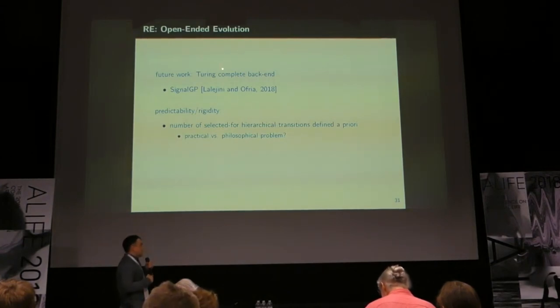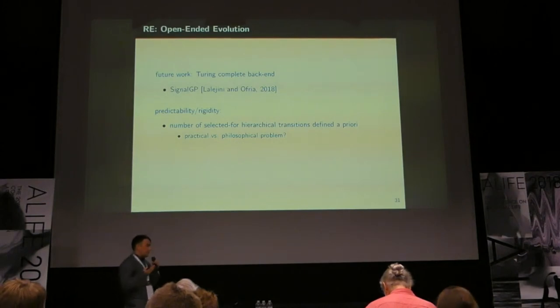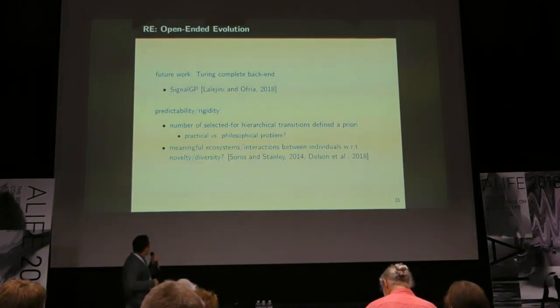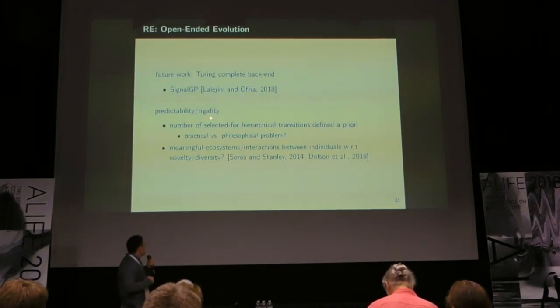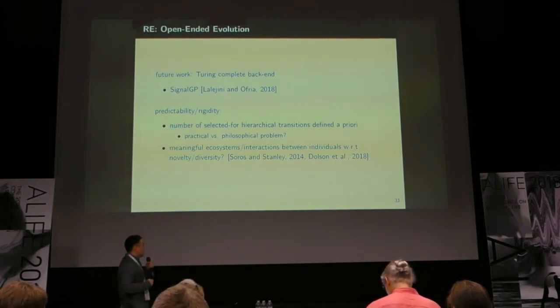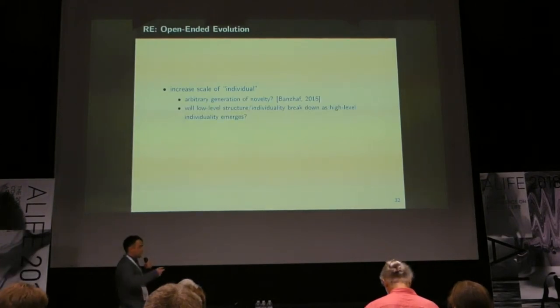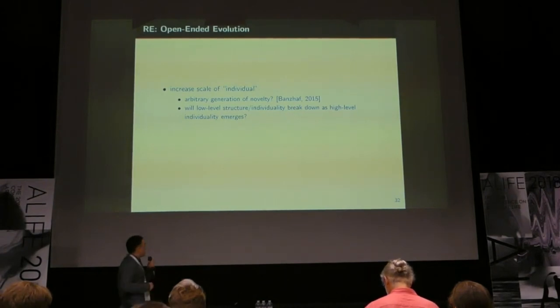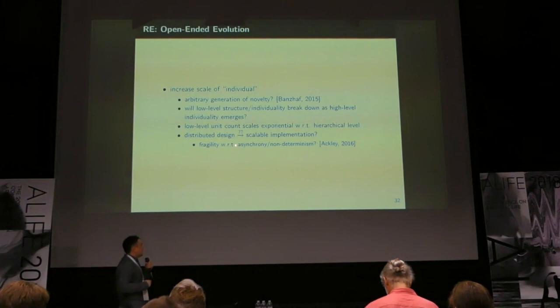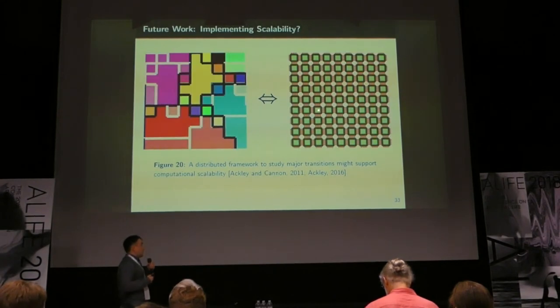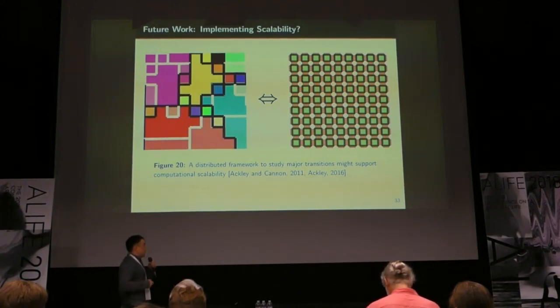Let me skip ahead to the interesting ones. We want to put in a more open-ended back-end to our system with SignalGP, the idea that these cells can do arbitrary computations to make arbitrary decisions about their lifestyle. One interesting question is, in our system you have to specify the number of hierarchical transitions selected for a priori, so at what point does that become more of a practical versus a philosophical problem? And of course the interesting part of major transitions is you can scale the complexity of an individual. And we're interested especially with the system in the relation between the distributed design of the system and how we can scale with respect to parallelism and take advantage of that distributed design to do large-scale experiments.